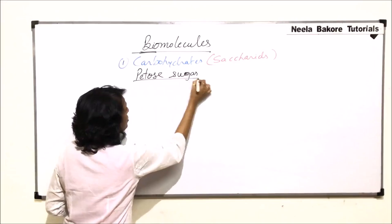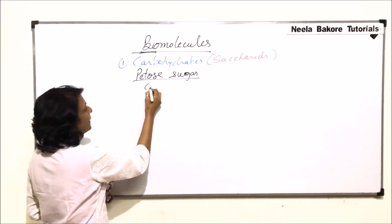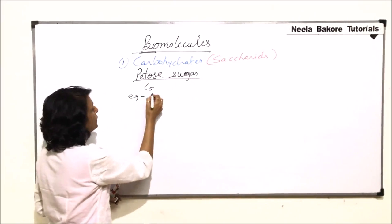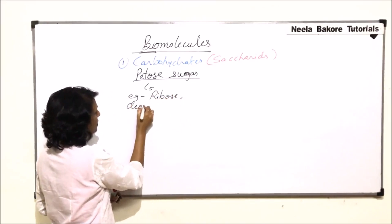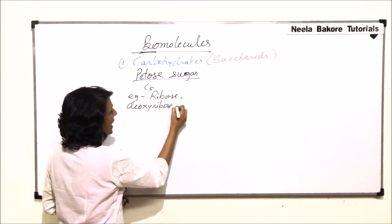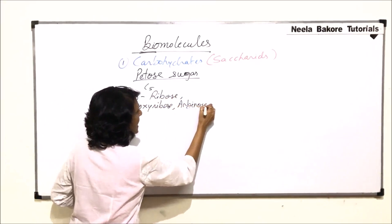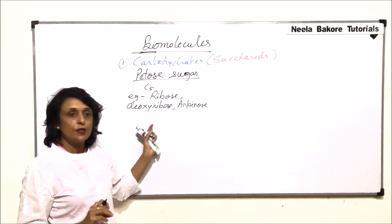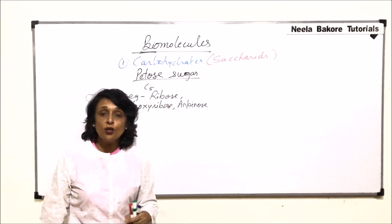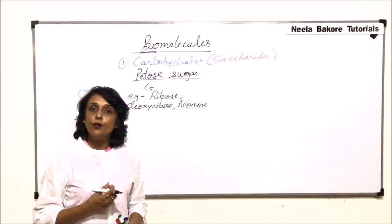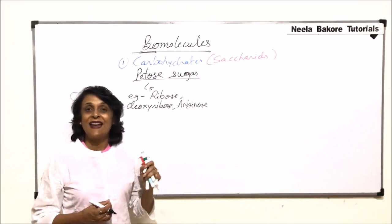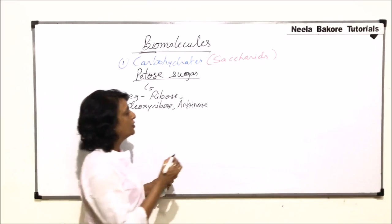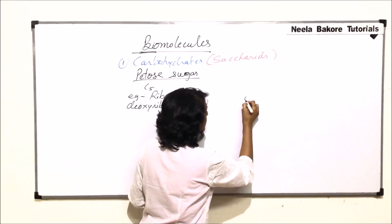Pentose sugars have five carbons and the formula C5H10O5. The main examples are ribose, deoxyribose, and arabinose. The most important pentose sugars are ribose and deoxyribose because they are essential for the formation of nucleic acids — ribose is present in RNA and deoxyribose is present in DNA.